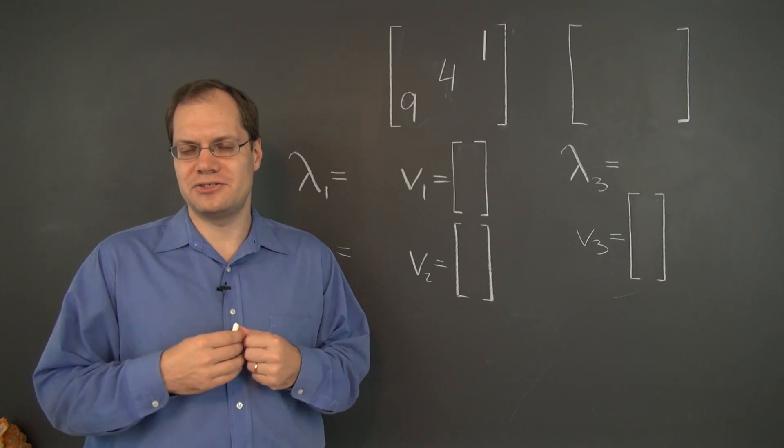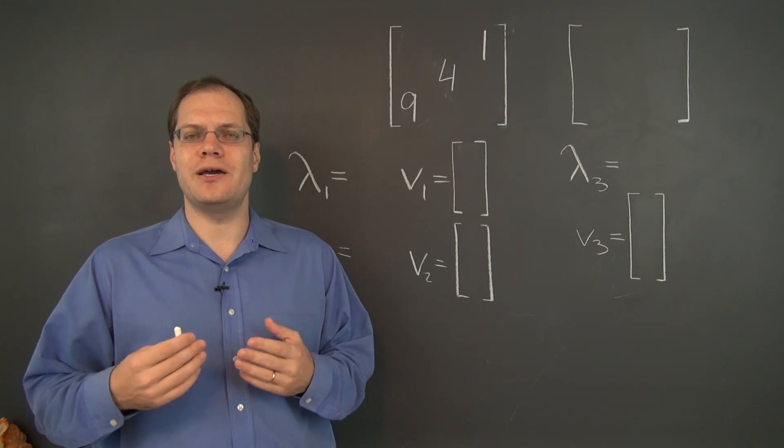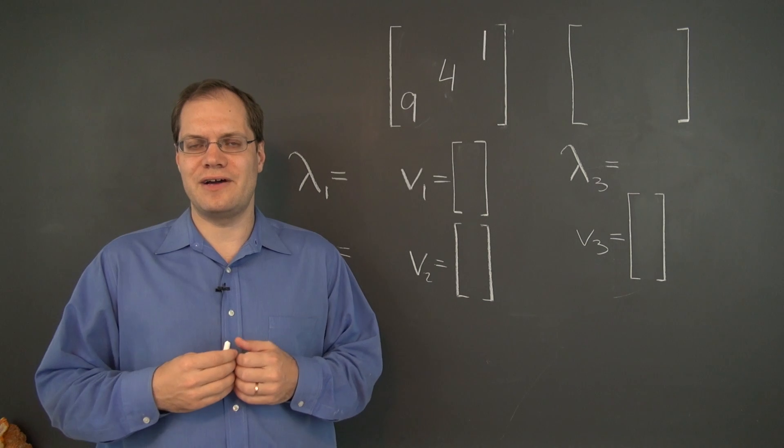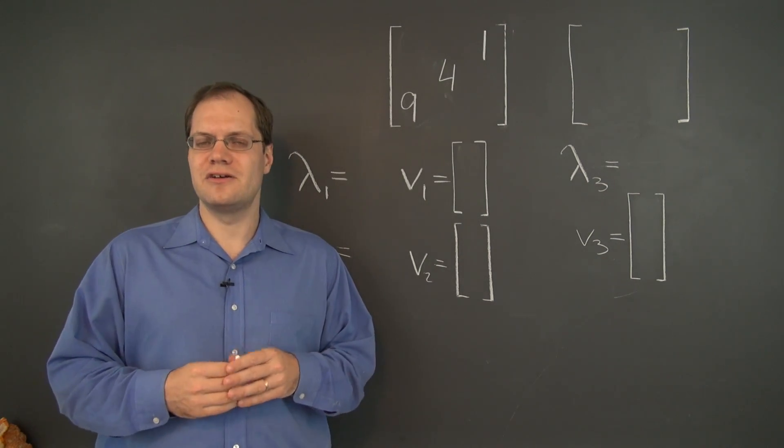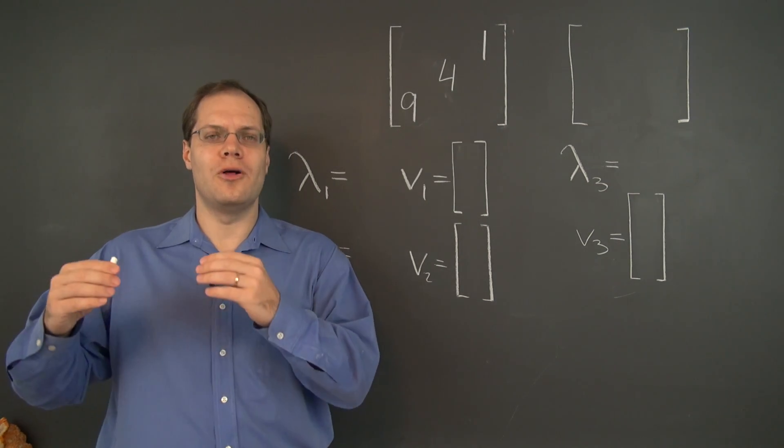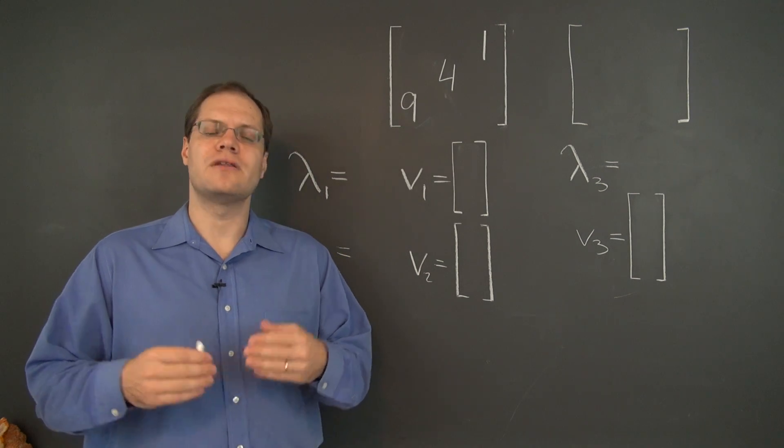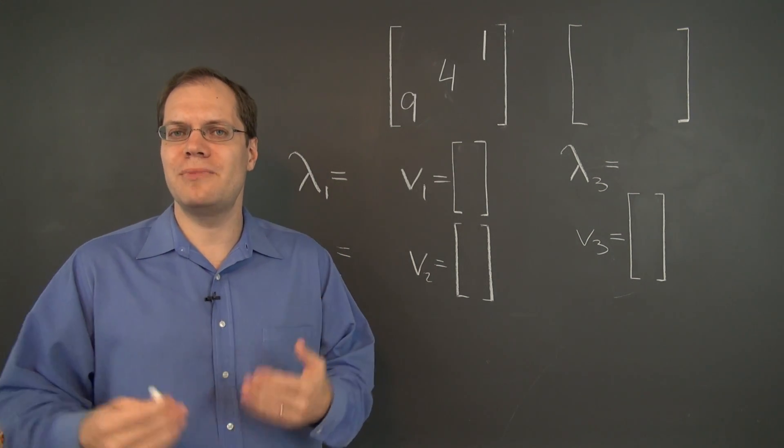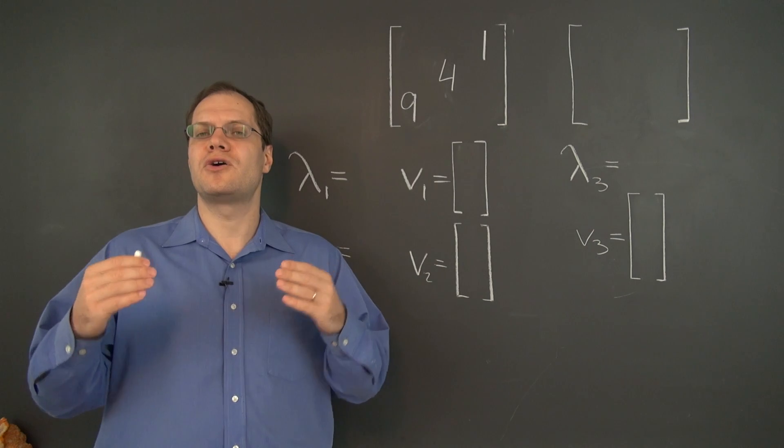Well then, the determinant of the matrix should be helpful in the same way, because the product of the eigenvalues equals the determinant. So once again, if we know all but one of the eigenvalues, the determinant should help us determine the remaining one.